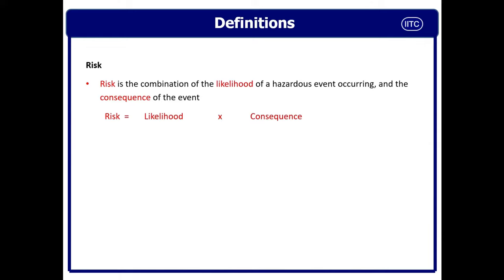Risk is basically a two-dimensional terminology. Risk is the combination of likelihood and severity — what we call consequence. Risk equals likelihood multiplied by consequence. Likelihood may be low to high or high to low; we will understand this when we discuss the risk matrix. Likewise, for every accident there is a low or high consequence, which we will understand when we discuss the risk matrix.